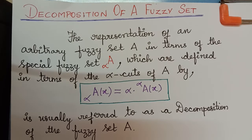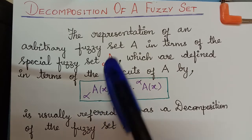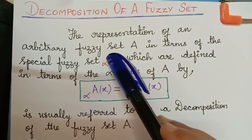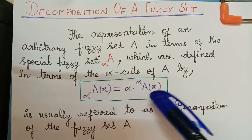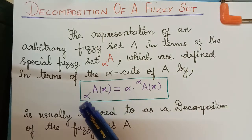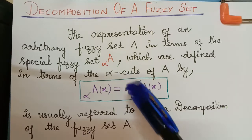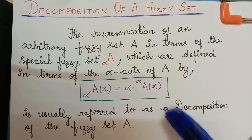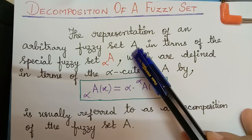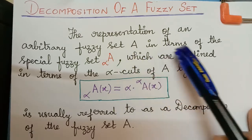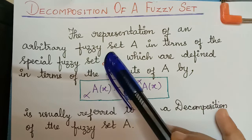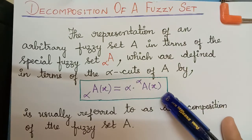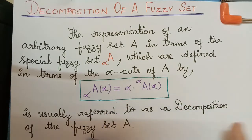Hello students. We shall now learn about decomposition of a fuzzy set. The representation of an arbitrary fuzzy set A in terms of the special fuzzy set alpha_A, which is defined in terms of the alpha cuts of A by: alpha_A(x) = alpha * [alpha-cut of A](x), is usually referred to as a decomposition of the fuzzy set A.